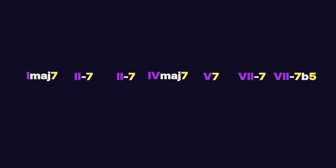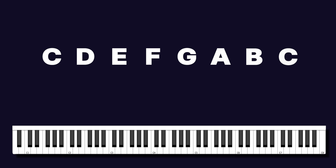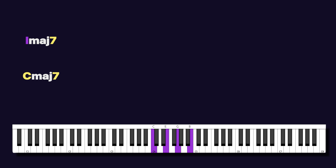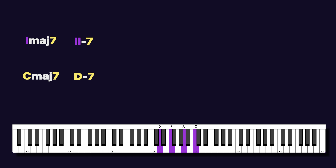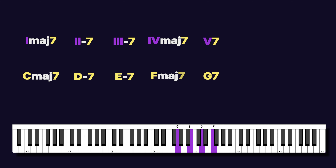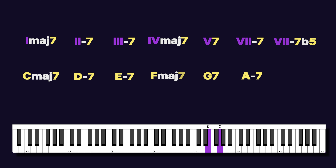In every major key we have one dominant chord, and that dominant chord is found at the fifth scale degree. Here's what that looks like. In the key of C major, we have a one major seventh at the first scale degree, a two minor seven at the second scale degree, a three minor seven, a four major seven at the fourth scale degree, a five dominant seven at the fifth scale degree, a six minor seven at the sixth scale degree, and a seven minor seven flat five at the seventh scale degree.